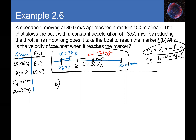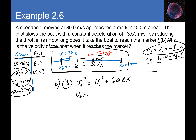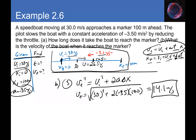That's equation 3: v_final² = v_initial² + 2·a·Δx. We have initial velocity, displacement, and acceleration, so: v_final² = 30² + 2(−3.5)(100) = 900 − 700 = 200. Taking the square root gives v_final = 14.1 meter per second.